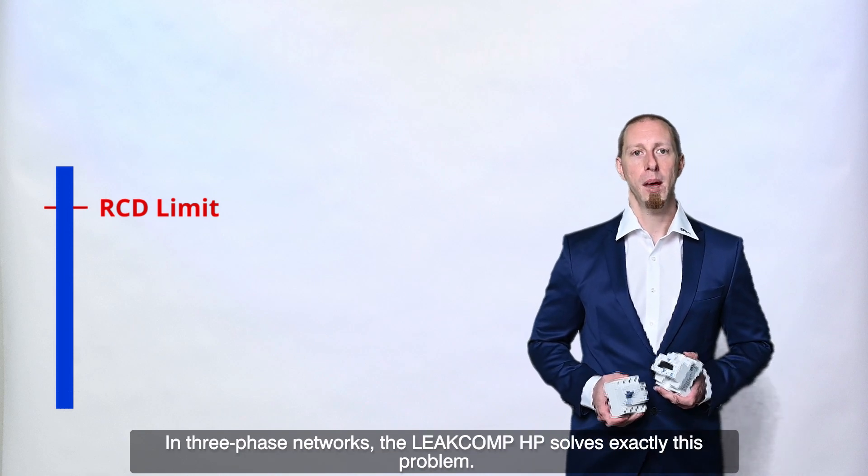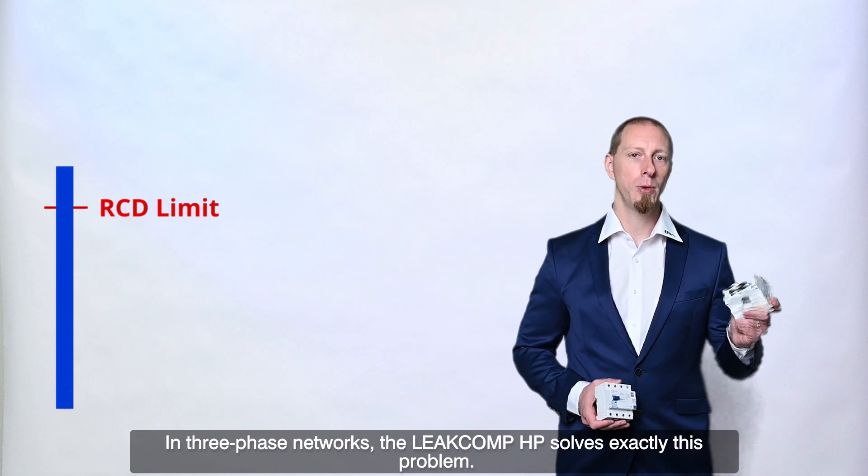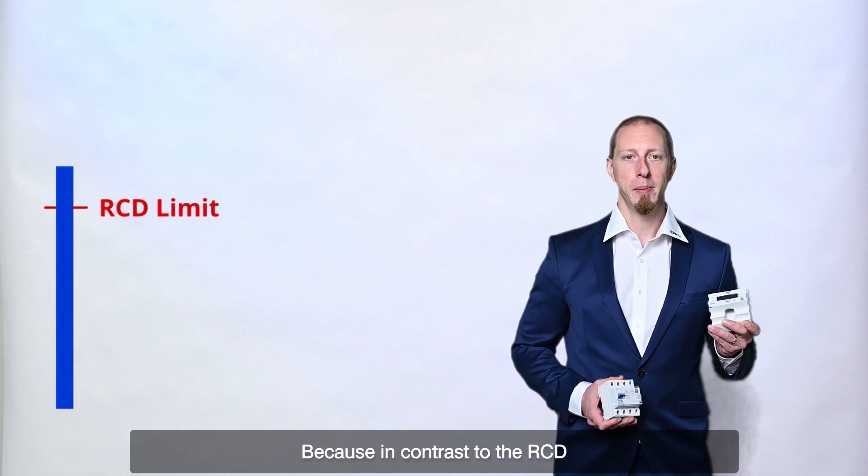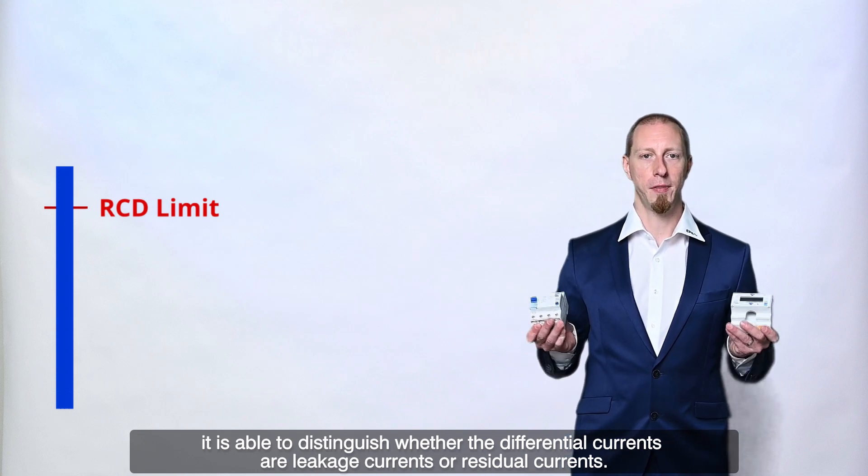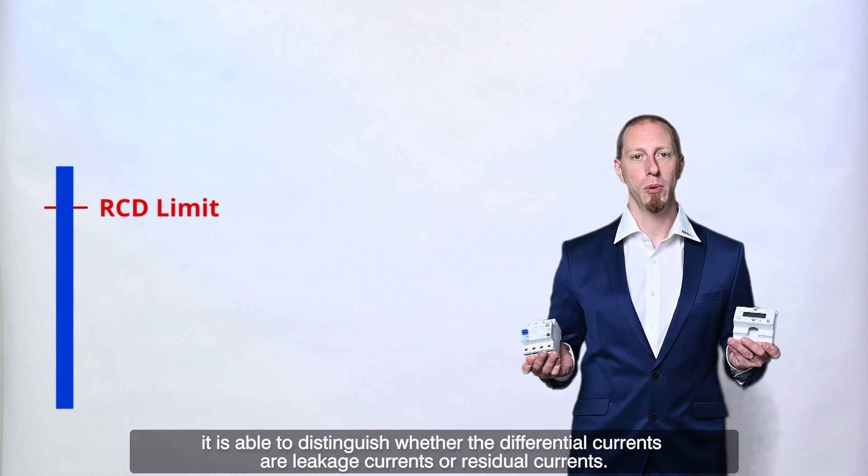In three-phase networks, the Leacomp HP solves exactly this problem. Because, in contrast to the RCD, it is able to distinguish whether the differential currents are leakage currents or residual currents.